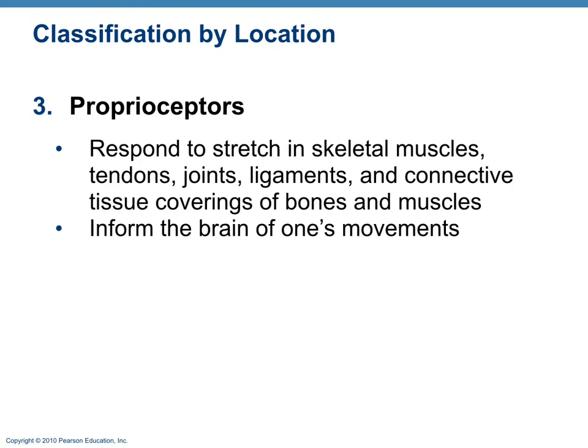Third, we have proprioceptors, which respond to stretch in the muscles, tendons, joints, ligaments, and connective tissues. They inform the brain of one's movements and position in space, giving input from joints, ligaments, tendons, and muscles to tell the brain where body parts are at any given time.